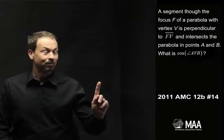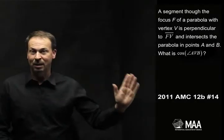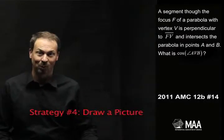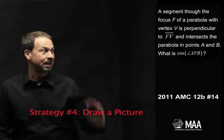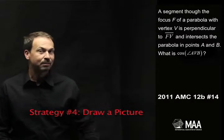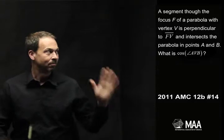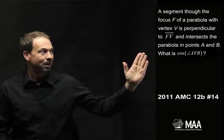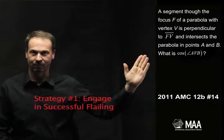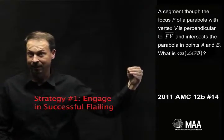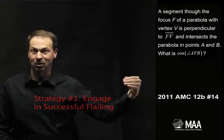First of all, as I read this question I see it's really about parabola, and it seems natural to do a very natural step: draw a picture. Strategy number four, always draw a picture if you can. But the question seems scary. So what I'm going to do here is honor my emotion. I'm not quite sure what's going on, but I'm going to engage in successful flailing. Strategy number one, just do something, see where it goes.